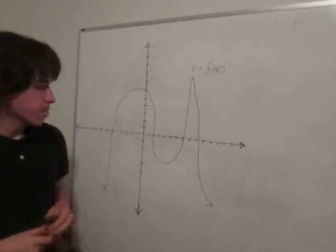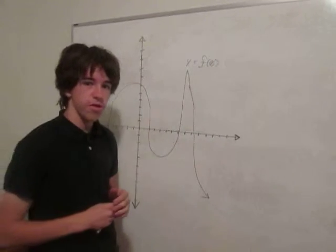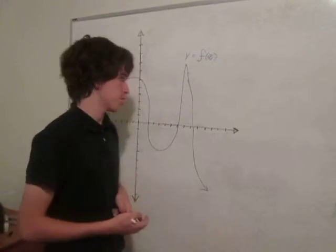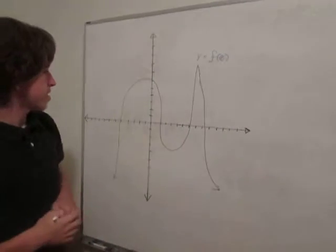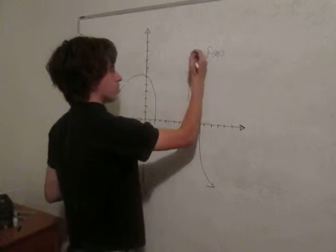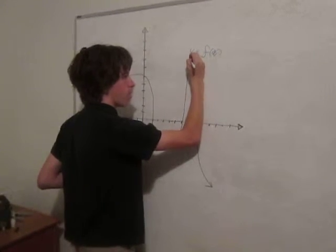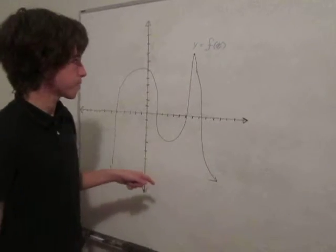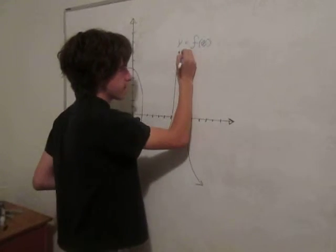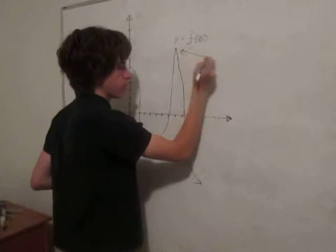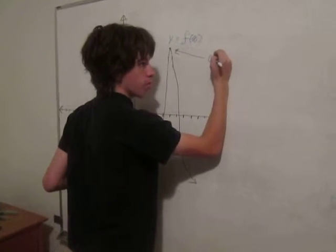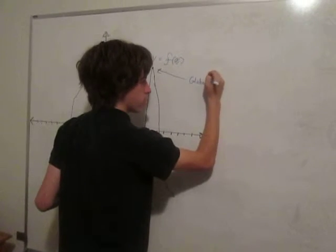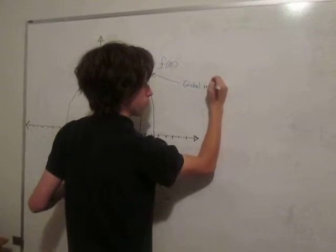Now, the maxima and the minima points are used to find the highest points on a function and the lowest points on a function. So I'm going to say that this is probably our highest point, because we're assuming that these are going down to negative infinity. This would be then our global, which means across the entire graph to infinity, global maximum.